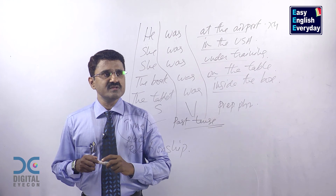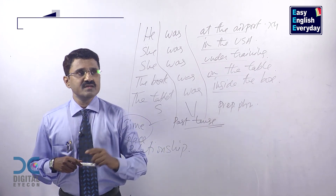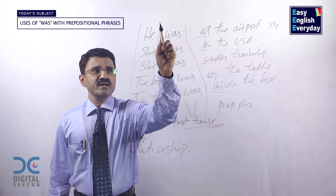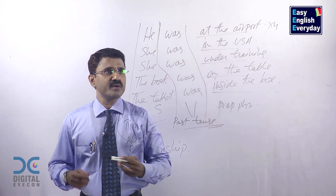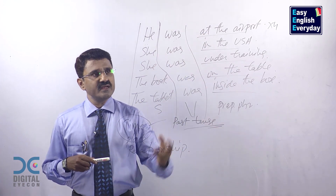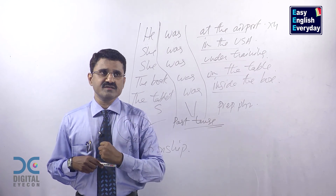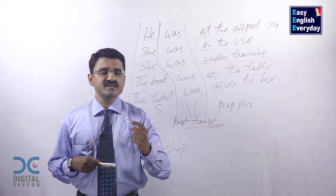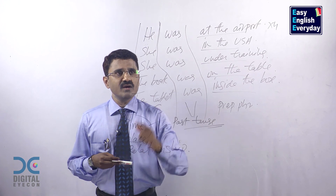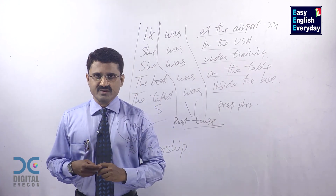This is the way to use this type of sentence. After making sentences, try to collect a large number of prepositional phrases and keep on making more and more sentences. This is the fourth use of 'was'. Now let us see what is the fifth use of 'was'.